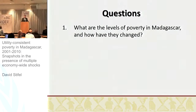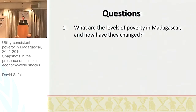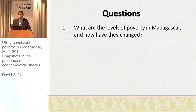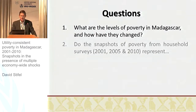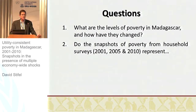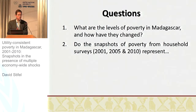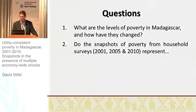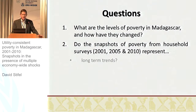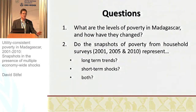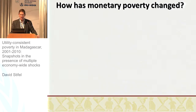Essentially two questions that we address in this paper. The first is, quite simply, what are the levels of poverty in Madagascar and how have these levels changed over time? The second is whether the snapshots of poverty from household surveys — from 2001, 2005, and 2010 — represent long-term trends in poverty, or how much they reflect short-term shocks or some combination of the two. For Madagascar, this is a very relevant question when thinking about poverty.